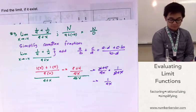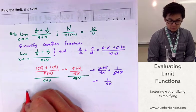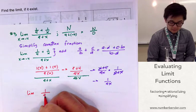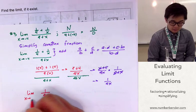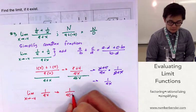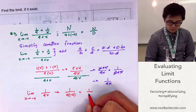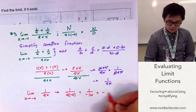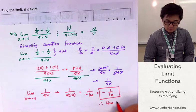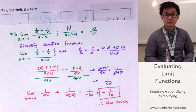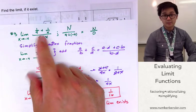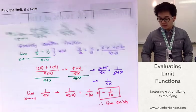Now we evaluate the limit of 1 over 4x as x approaches negative 4. By substitution, we have 1 over 4 times negative 4, which is 1 over negative 16, or negative 1 over 16. Therefore, the limit exists. Problem number 3, a complex fraction, can be modified by simplifying the complex fraction.